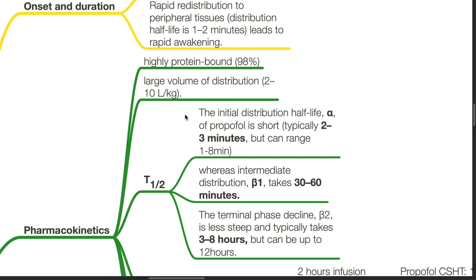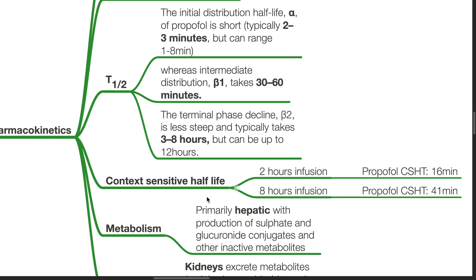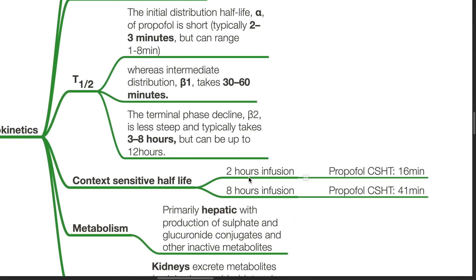Pharmacokinetics: Propofol is highly protein bound, up to 98%, with a large volume of distribution of 2 to 10 liters per kg. The initial distribution half-life (alpha) is typically 2 to 3 minutes but can range from 1 to 8 minutes. The intermediate distribution beta-1 half-life is 30 to 60 minutes, while the terminal phase decline (beta-2) typically takes 3 to 8 hours but can be up to 12 hours. The context-sensitive half-life for a 2-hour infusion of propofol is 16 minutes, and 41 minutes for an 8-hour infusion.